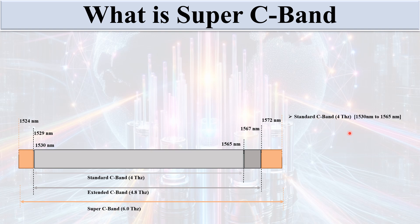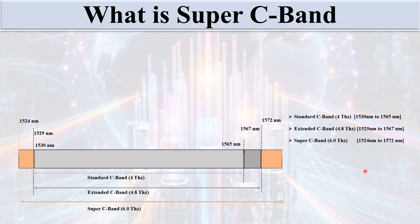To summarize: Standard C Band ranges from 1530 to 1565 nanometers with 4 terahertz spectrum. Extended C Band ranges from 1529 to 1567 nanometers with 4.8 terahertz spectrum. Super C Band ranges from 1524 to 1572 nanometers with 6.1 terahertz of spectrum.